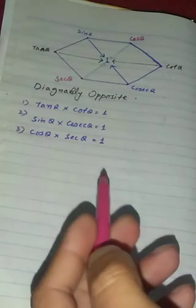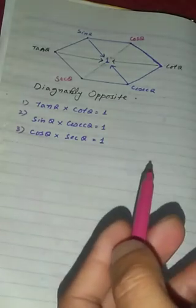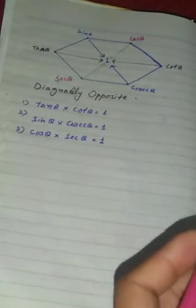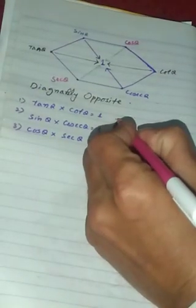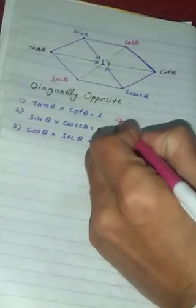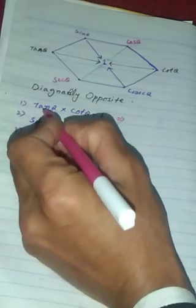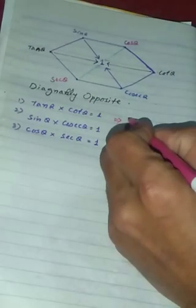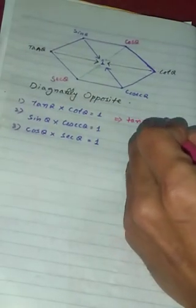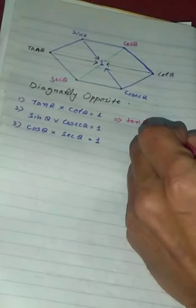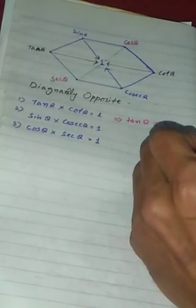The second question involves the third identity. We have to derive the formula. The formula is: tangent theta equals 1 divided by cotangent theta.